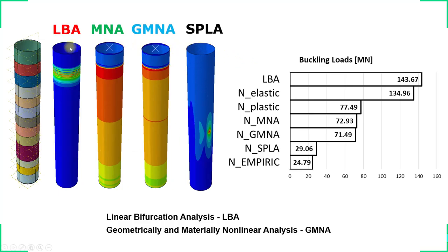Different analysis types were performed: a non-linear FEM model with varying thickness, a linear bifurcation analysis (LBA), and elastic analytical equations. The LBA and the elastic analytical values are comparable, showing the FEM model is reliable. These values are used to determine the design load for axial compression.